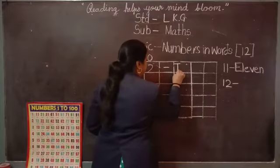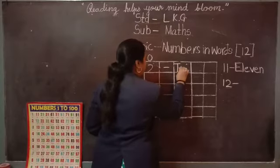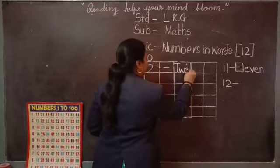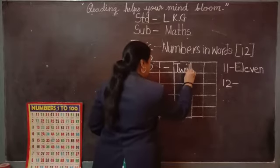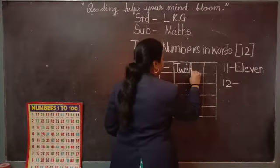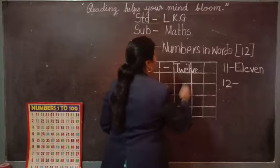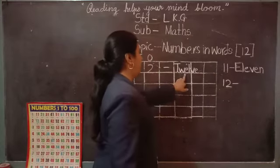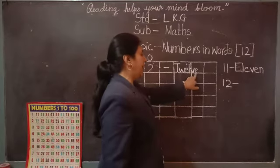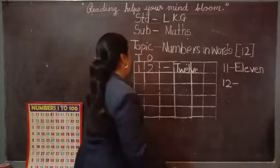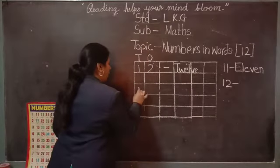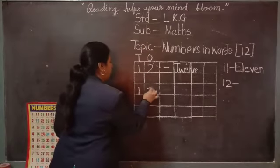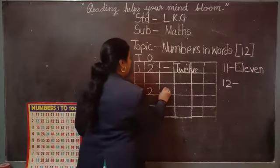T, W, E, L, V, E - twelve. T-W-E-L-V-E, 12. Once again, look here: 1, 2, 12. Dash.